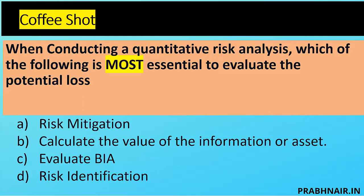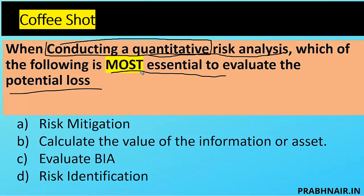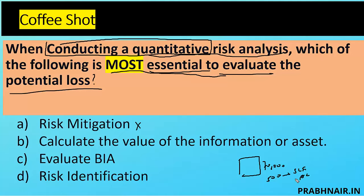Question six: when conducting a quantitative risk analysis, which of the following is most essential to evaluate potential loss? Option A — risk mitigation — comes after evaluation. Option B — calculate the value of the information asset — because asset value is essential: for example, if a server generates 70,000 in revenue and an attack reduces it to 5,000, we can calculate SLE and ARO. Without knowing the asset value in numbers, we cannot produce quantitative reports.